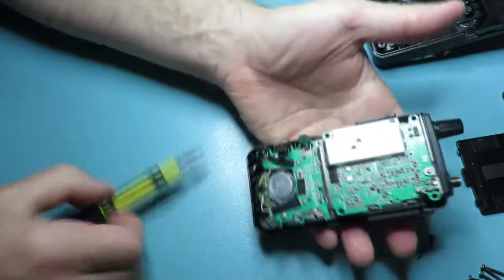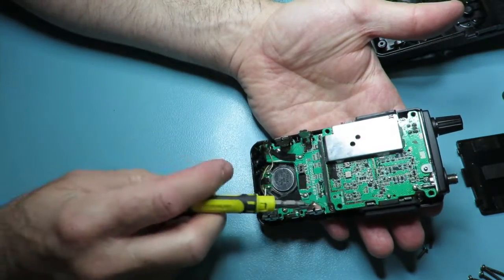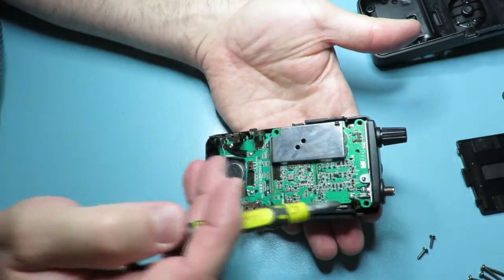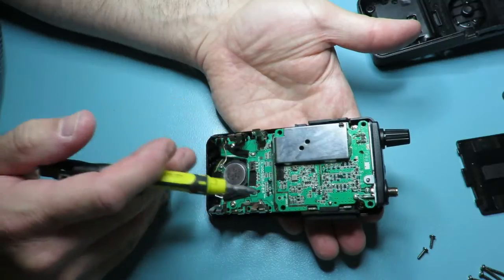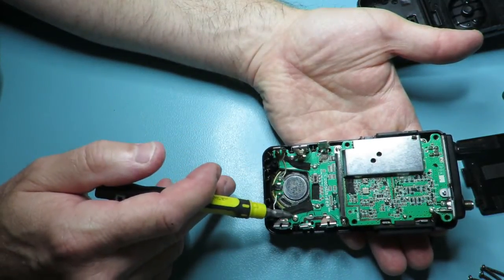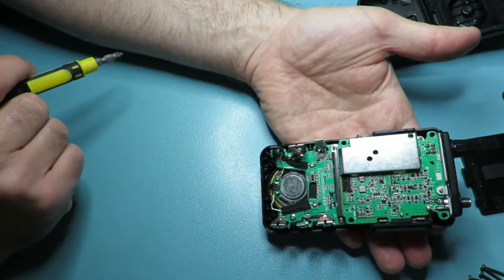Okay so here we have the main board, again there are six screws. We have one in each corner, one, two, three, four and then we've got two by the speaker, five and six. All these again need to come out.